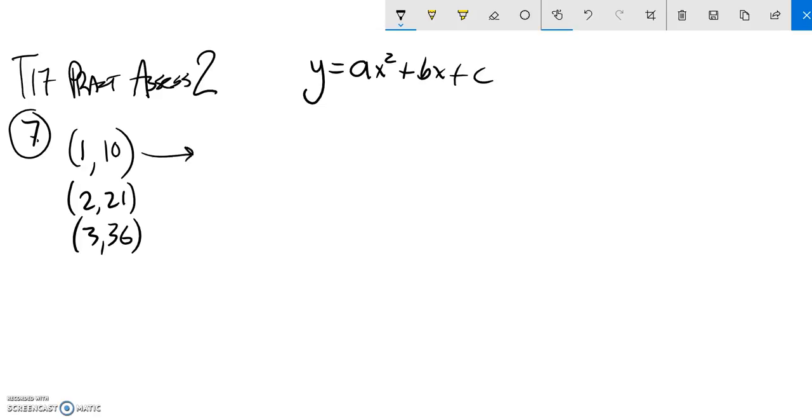So first thing I'm going to do is just plug these into this equation. So I know the first number in the ordered pair is X, the second one is Y. So when Y is 10, X is 1.